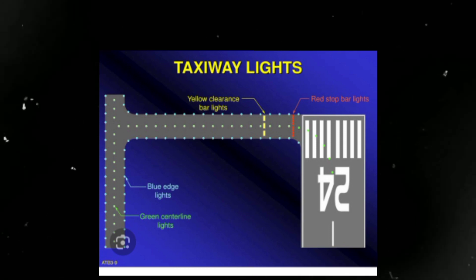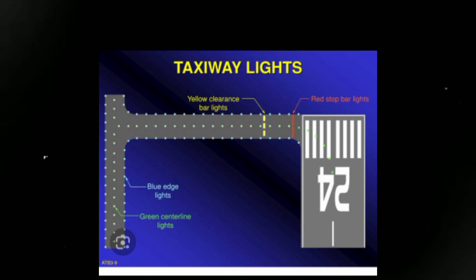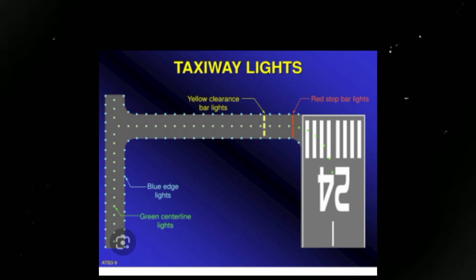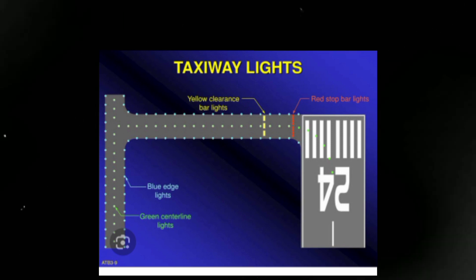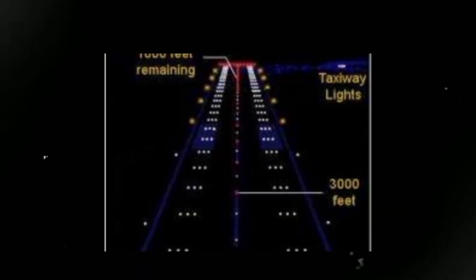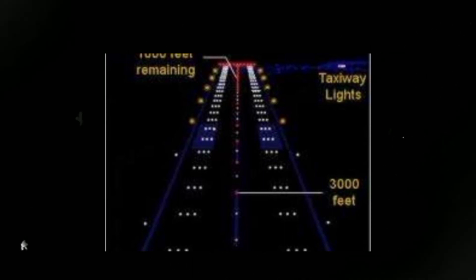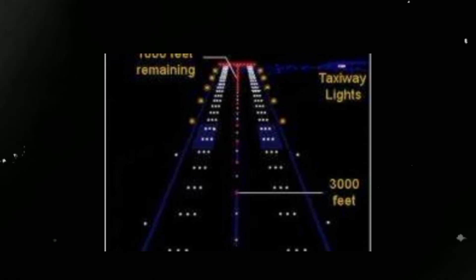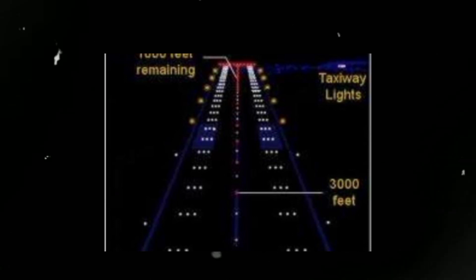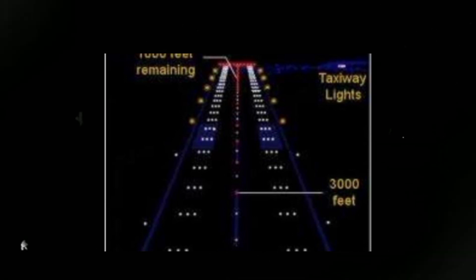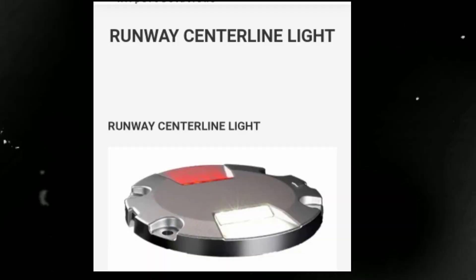Pilot confidence: taxiway lights contribute to the overall safety and efficiency of airport operations, giving pilots more confidence when maneuvering on the ground. The configuration and color of taxiway lights may vary depending on airport layout and relevant regulations. The lights are usually powered by electricity and are designed to be visible from a distance, helping pilots maintain a clear path during taxi operations.